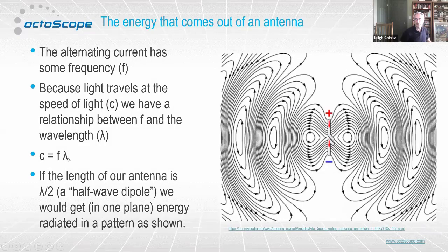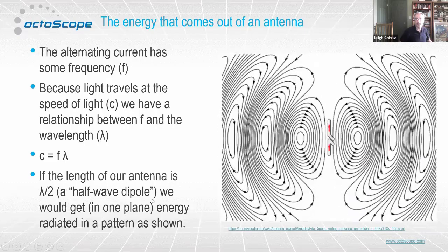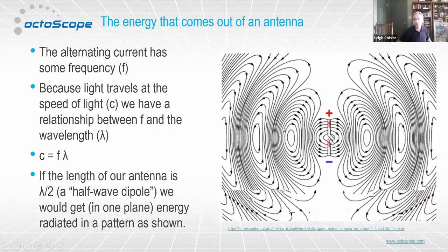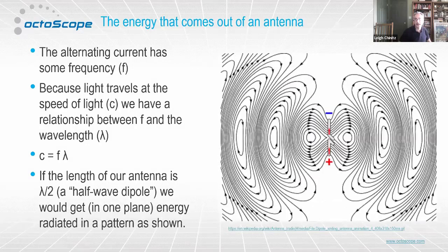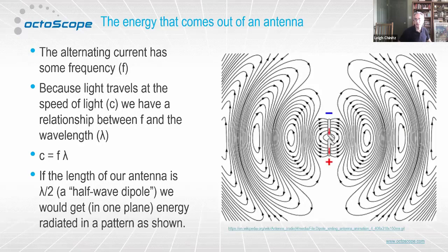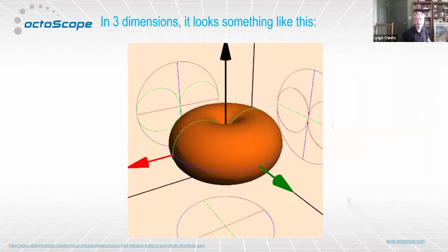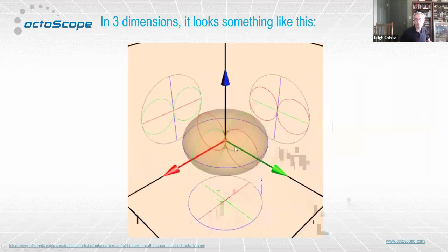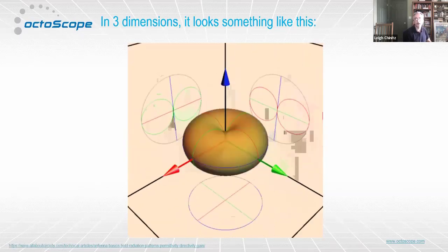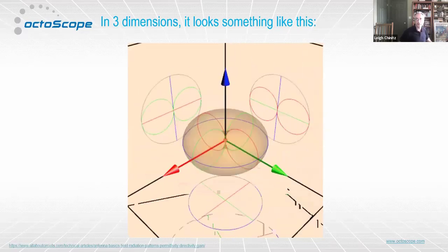Because light travels at the speed of light, there's a relationship between frequency and wavelength: the speed of light equals frequency times wavelength. If the length of the antenna is about half of the wavelength, we get a specific energy pattern — shown here as a slice in space. In three dimensions it looks like a donut shape — symmetric all the way around — referred to as a toroid. That's what the field coming out of a half-wave dipole looks like.